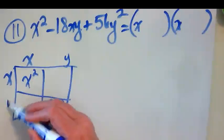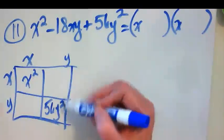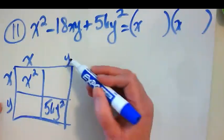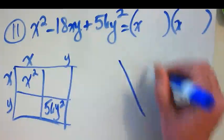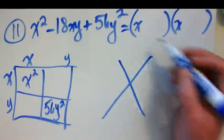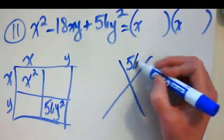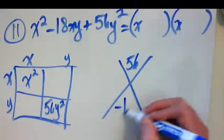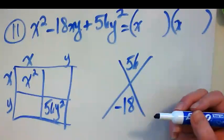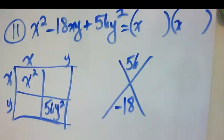I know in this box I get x squared and in this box I get 56y squared. That means this is an x and this is an x, which with my parentheses means x here and x here. There's something in front of these y's. But to get that y squared here, y times y has to happen.